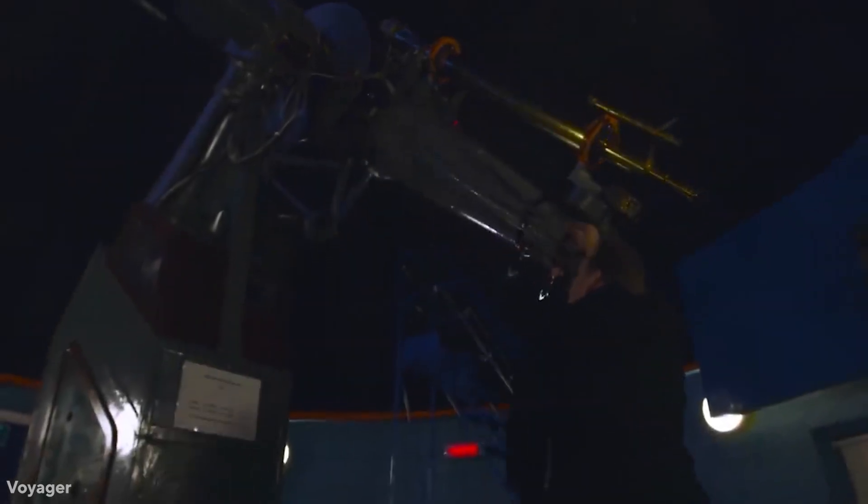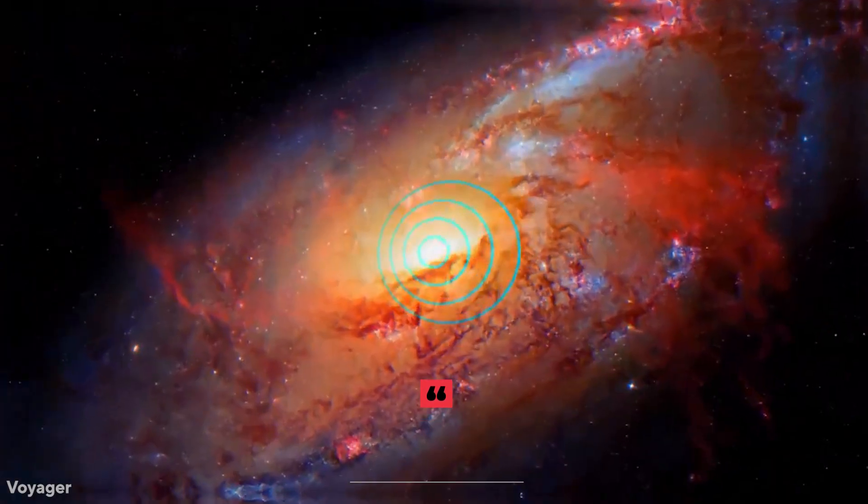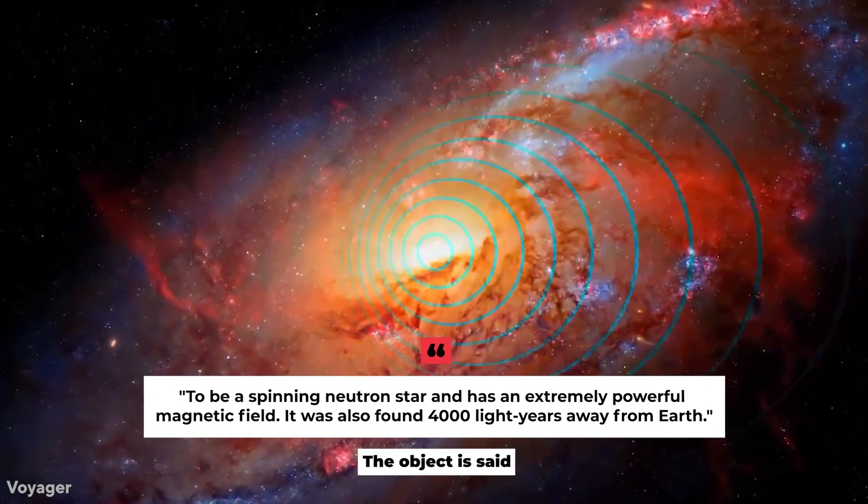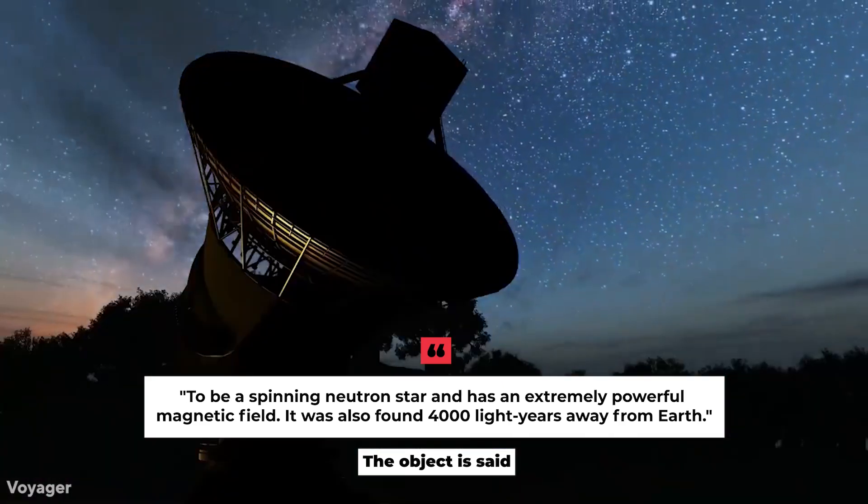A group of astronomers have discovered a strange object that emits a beam of radio waves every 18 minutes. The object is said to be a spinning neutron star with an extremely powerful magnetic field. It was found 4,000 light years away from Earth.